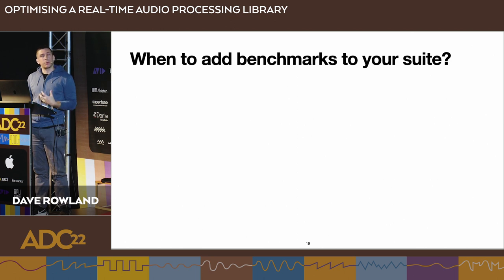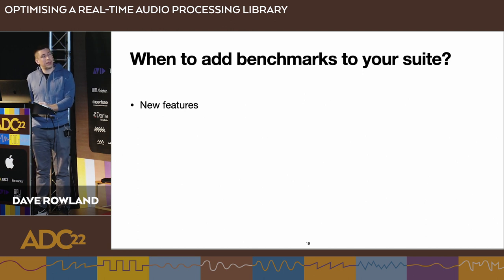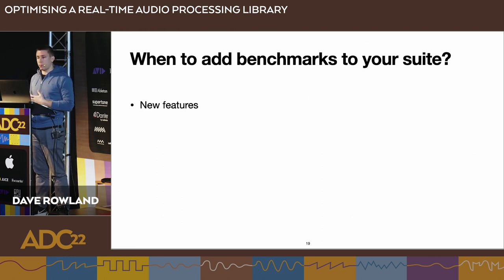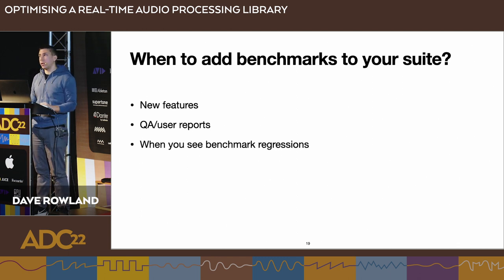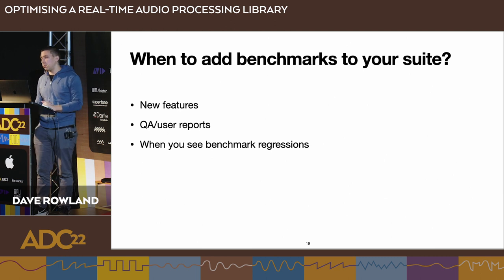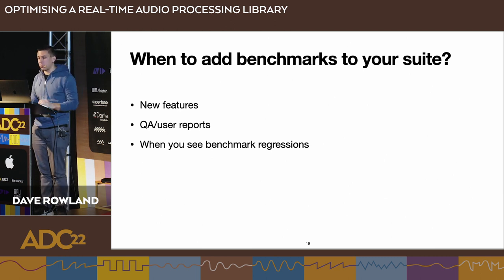When should we add benchmarks? Similar to unit tests: when you write new code or features, you should write benchmarks alongside them. Also when QA or users report something performing slowly—beach balls being a good indicator. And when you see regressions: if a macro benchmark suddenly takes much longer, you might split out components to identify where the performance issue is.